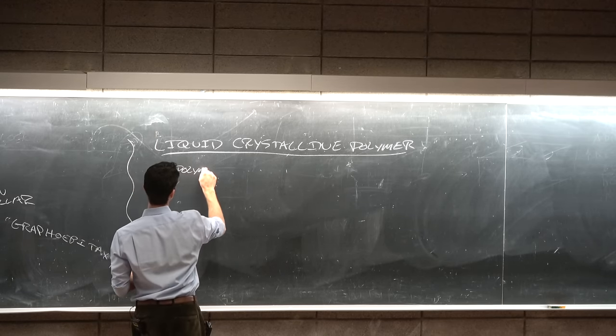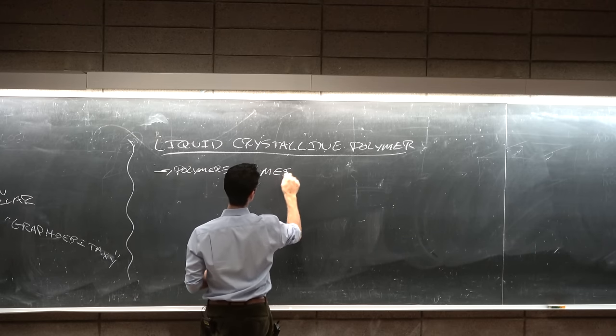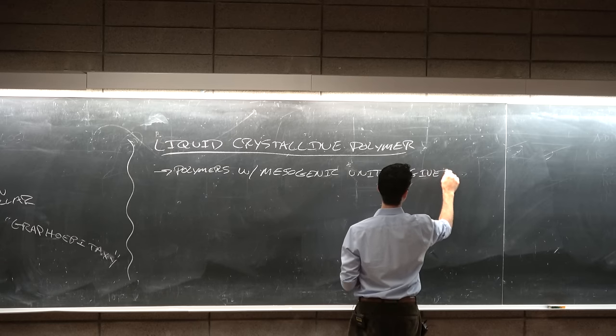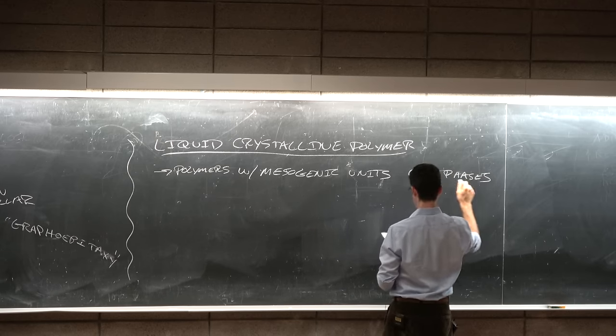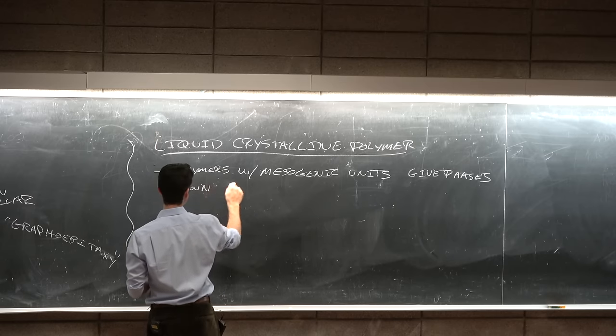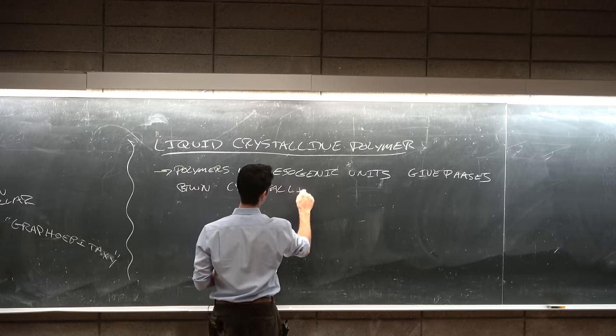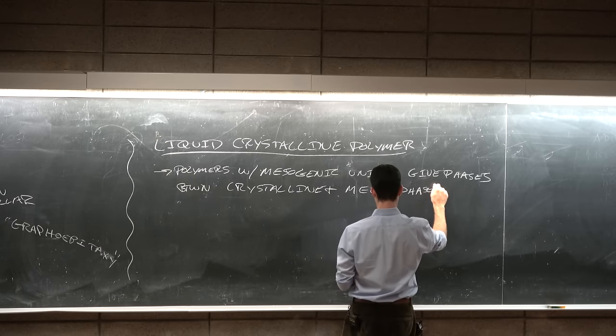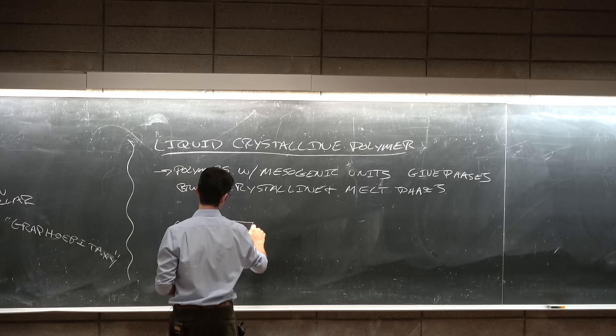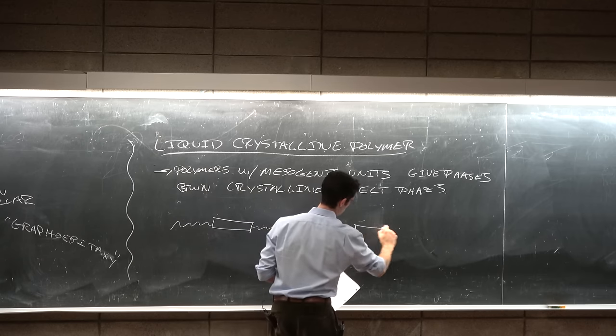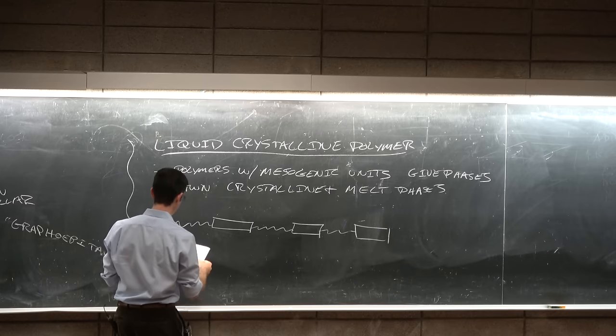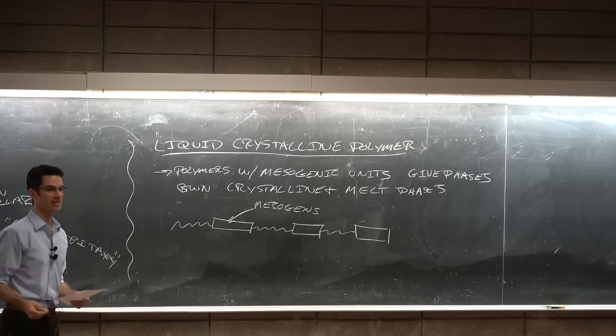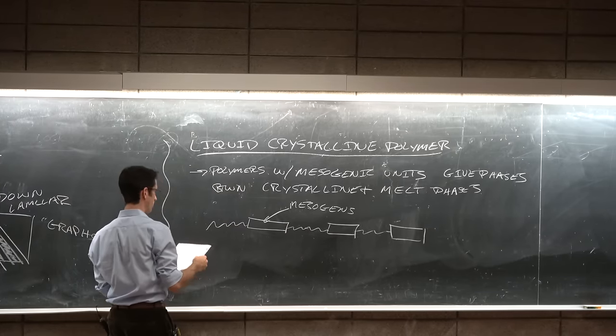So these are polymers with mesogenic units that give phases between the crystalline and melt phases. Where these things are the mesogens, and it's some molecular structure that's stiffer than every other flexible linker.